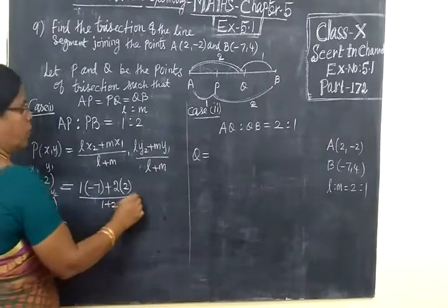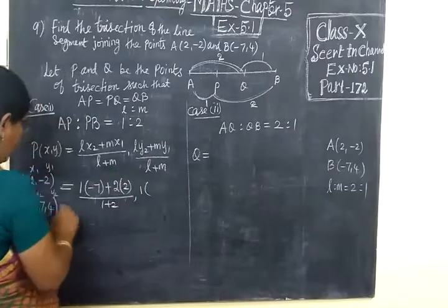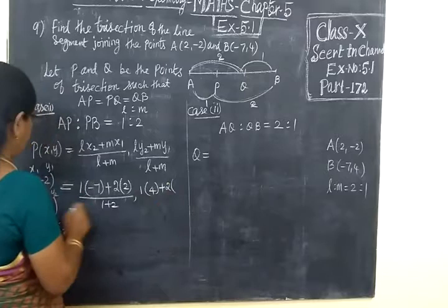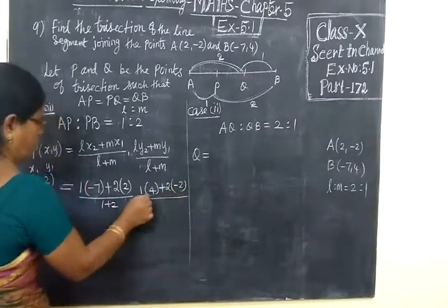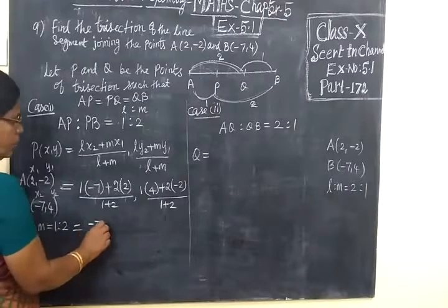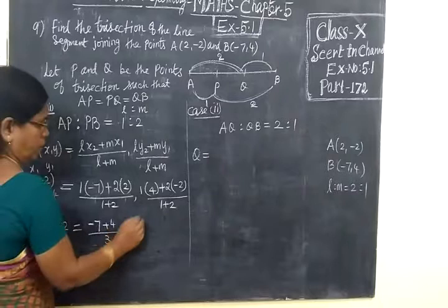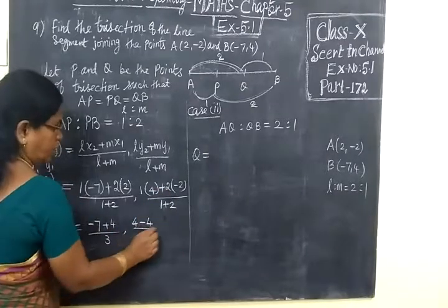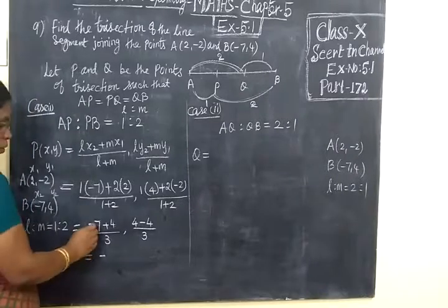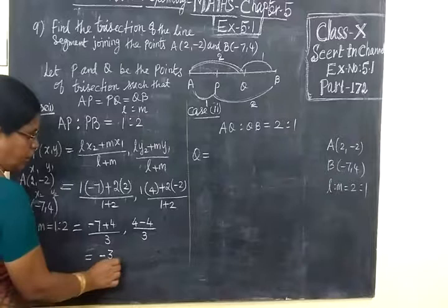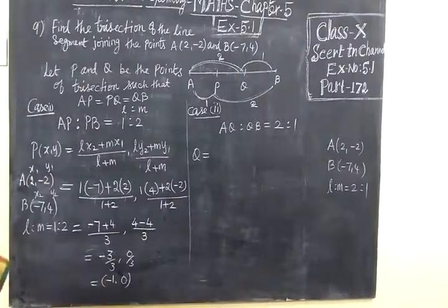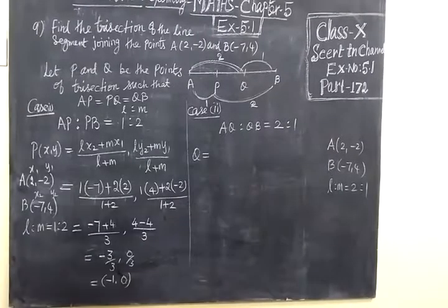Then comma L, 1 bracket Y2. Y2 is 4 plus M, 2 bracket Y1. Y1 is minus 2 by L plus M. So 1 plus 2. So this is equal to minus 7 plus 4 by 3. Then 4 minus 4 plus minus 2 by 3. So the answer is here, always put the greater number sign first. Minus 3 by 3, 4 minus 4, 0 by 3. So the answer is minus 1 comma 0. We check the answers. The answer is minus 1 comma 0. So this answer is correct.